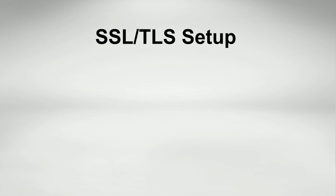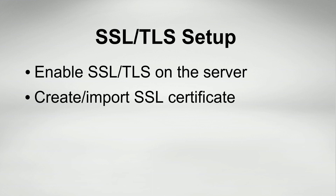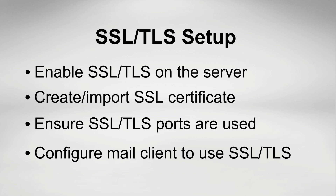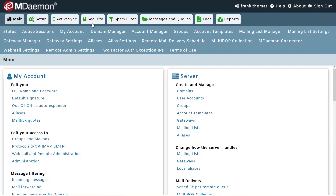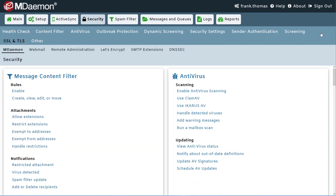Setting up SSL and TLS between sending mail clients and the MDAEMON server is accomplished by enabling SSL and TLS on the MDAEMON server, creating or importing an SSL certificate, ensuring the proper ports for SSL and TLS communications are being used, and configuring the mail client to send outgoing mail using SSL and TLS via the proper port. In MDAEMON Remote Administration, these settings are located under the Security, SSL and TLS menu.